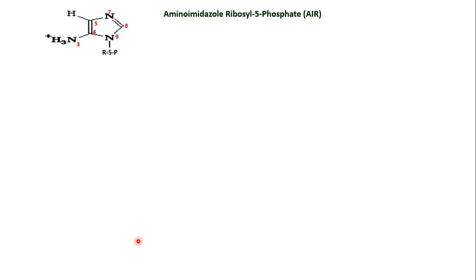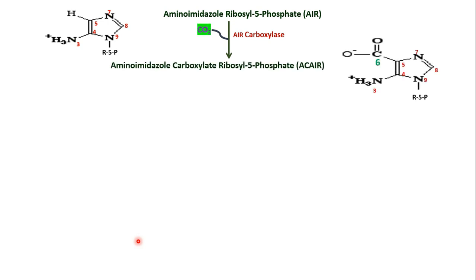Continuing from amino imidazole ribosyl 5-phosphate, the next step involves insertion of carbon dioxide on the 6th position of the purine ring. The C6 carbon is provided by carbon dioxide. The enzyme required is a carboxylase, and a carboxyl group is added to form amino imidazole carboxylate ribosyl 5-phosphate, which is the 6th position of the purine ring.